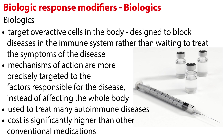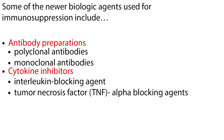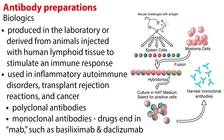Biologics are used to treat many autoimmune diseases. However, their cost is significantly higher than other conventional medications. Some of the newer biologic agents used for immunosuppression include antibody preparations, which include polyclonal antibodies and monoclonal antibodies, and cytokine inhibitors, which include interleukin blocking agents and tumor necrosis factor alpha blocking agents. Antibody preparations are produced in the laboratory or derived from animals injected with human lymphoid tissue to stimulate an immune response. These drugs are used in inflammatory autoimmune disorders, transplant rejection reactions, and cancer.